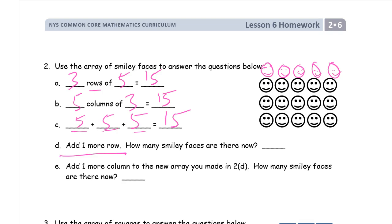How many smiley faces are there now? Well, we know the original array had 15, so that's 16, 17, 18, 19, 20, or it's another five. 5, 10, 15, 20. There's 20 smiley faces.